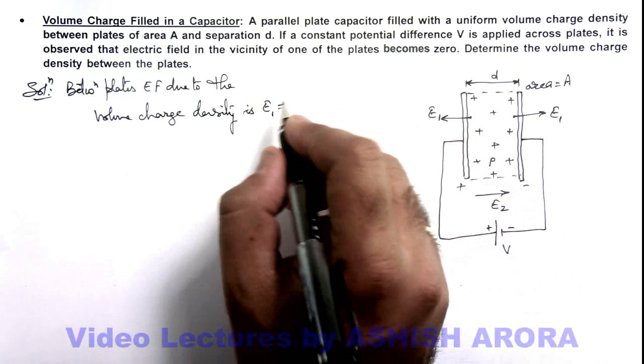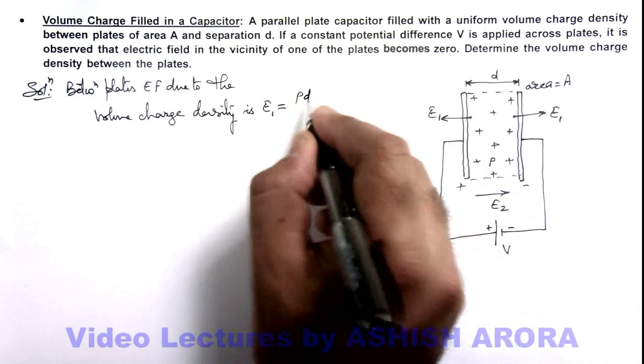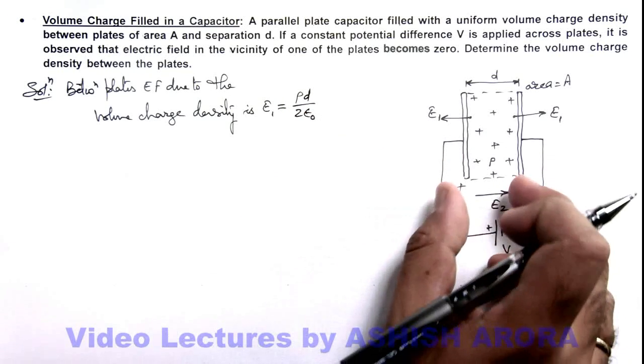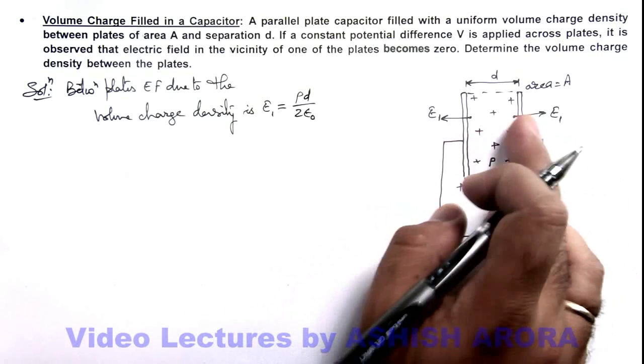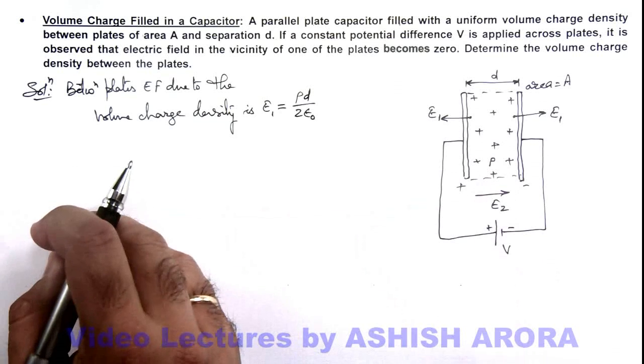Because we assume the plates to be large, it can be written as ρd/(2ε₀). That is the electric field due to a sheet of width d in the outside region of this sheet, or just at the vicinity of the surface of the sheet.